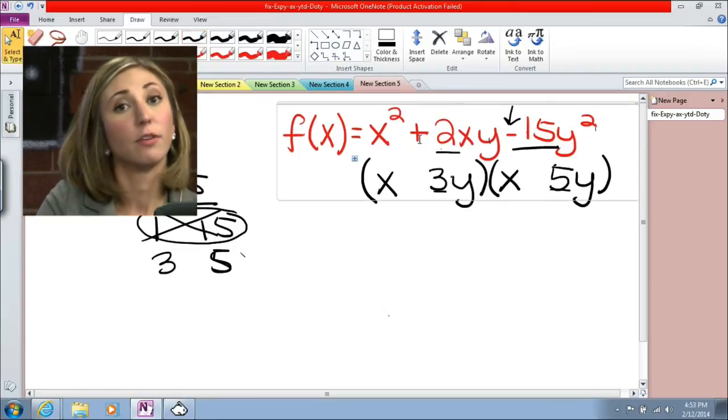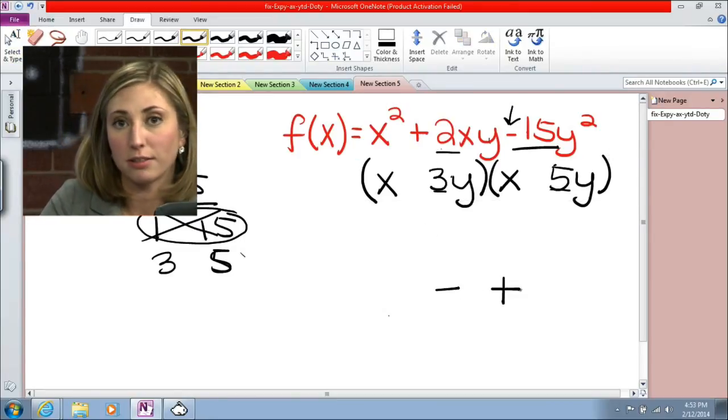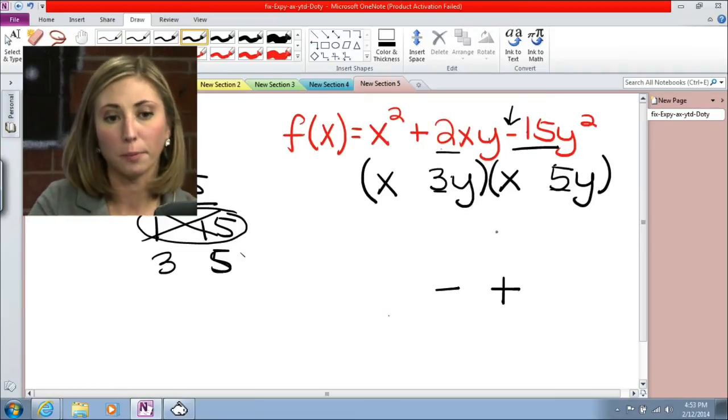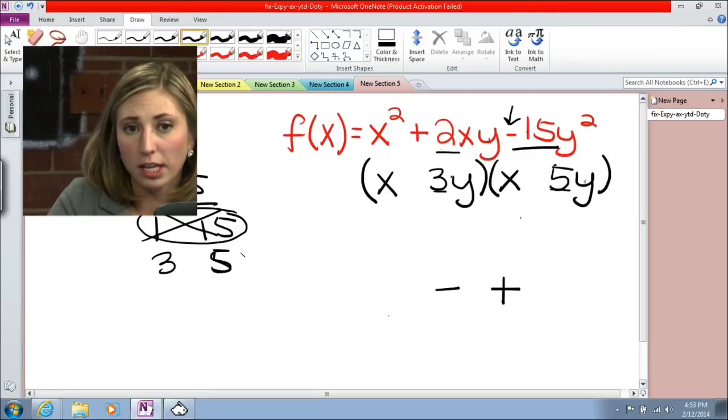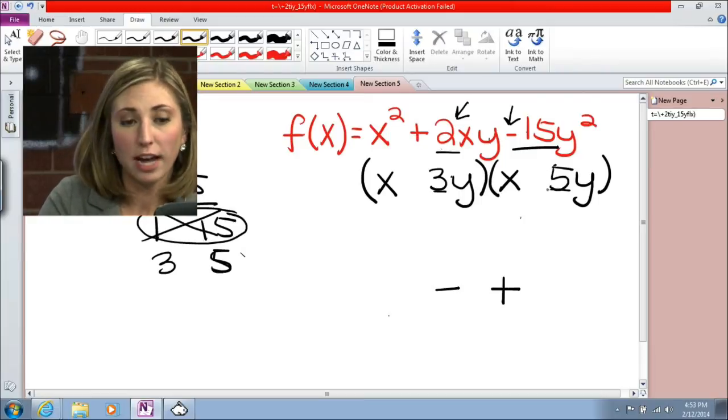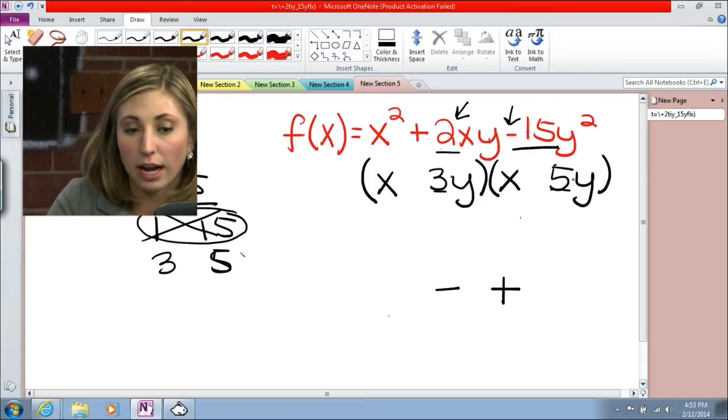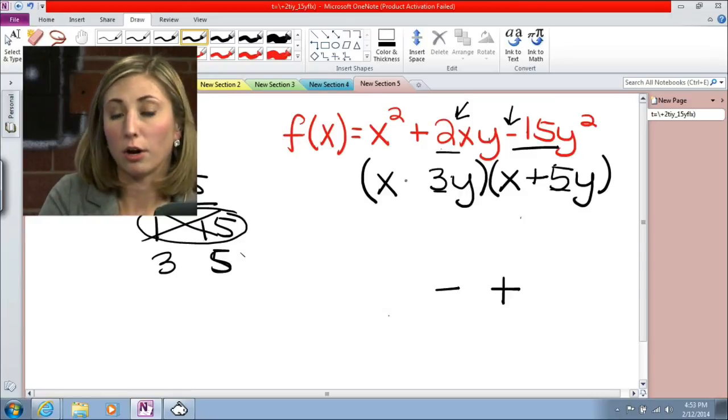So we know we're going to have one negative and one positive. Now we just have to decide where they go. I mentioned earlier that the 3y and the 5y, they need to add up to give us this 2. And so to add to give us positive 2, what would have to happen is this 5 is going to have to be our positive number, and then our 3 is going to have to be this negative number.